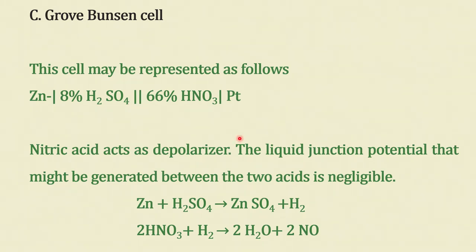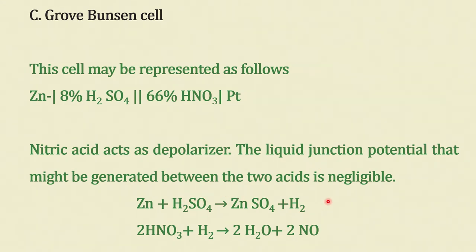The Grove-Bunsen cell is essentially: zinc | H₂SO₄ || HNO₃ | platinum electrode, with H₂SO₄ and nitric acid separated by a salt bridge. Nitric acid acts as a depolarizer, and the liquid junction potential generated between the two acids is negligible. The reactions are: zinc with sulphuric acid produces zinc sulfate, and HNO₃ with H₂ produces water and nitric oxide.